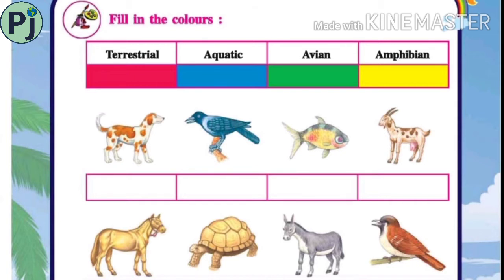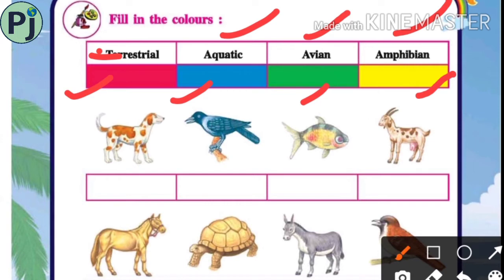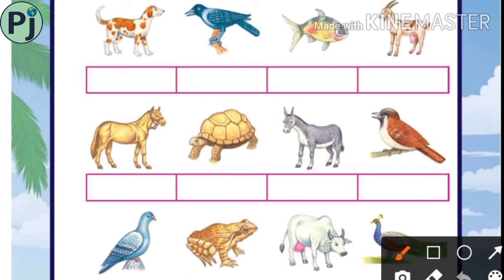Now see here — fill in the colors. The first picture is dog, so dog is a terrestrial animal — fill red color. Then bird is avian — fill green color. Then fish is a water animal, so aquatic — fill blue color. Goat is terrestrial, so red.